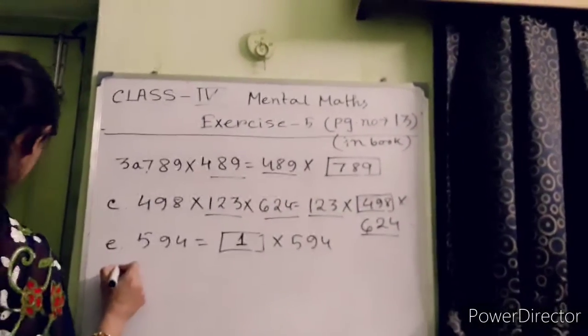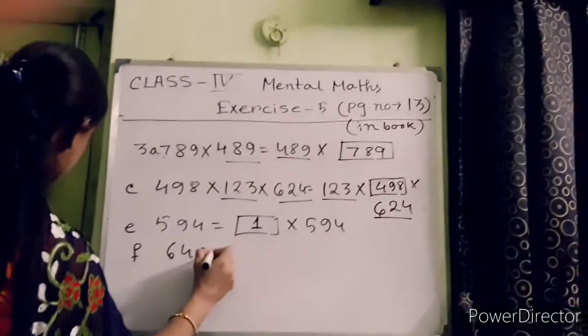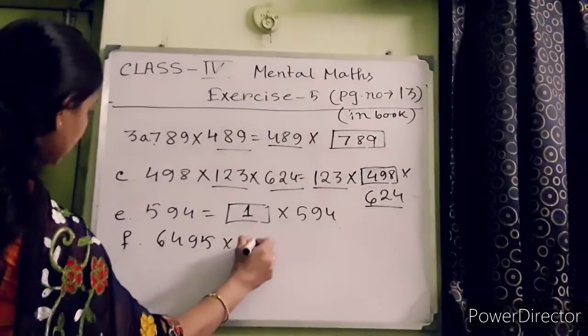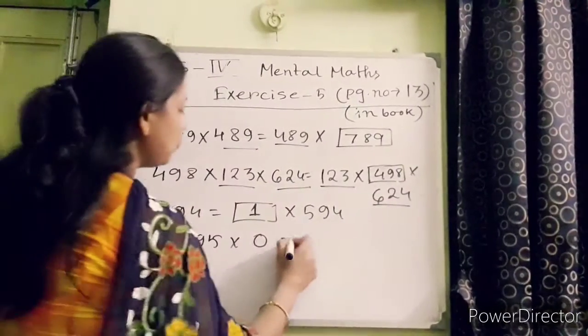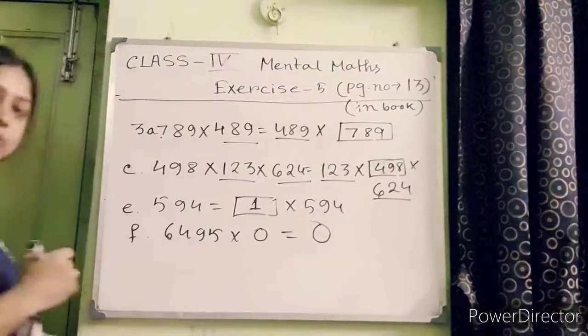Now 8: 6495 into 0. Very easy. When you multiply any number with 0, you will get 0.